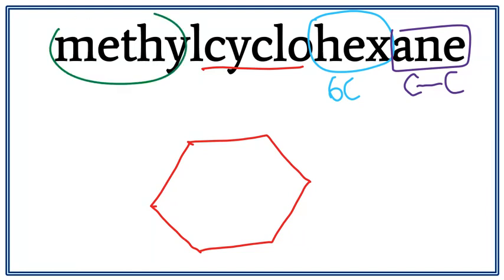We also have a methyl attached to this cyclohexane. We don't see any number here. When we don't see a number, this means the methyl is attached on the first carbon. We don't really need to number cyclohexane because any of these carbons can be the first carbon.